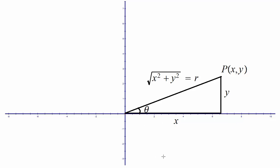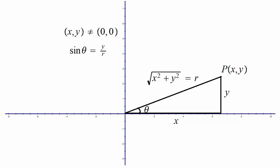So if we want to write sine theta, that will be the opposite side over the hypotenuse — sine theta equals Y over R. We are assuming we are not at the origin. Cosine would be adjacent over the hypotenuse, so that's X over R.